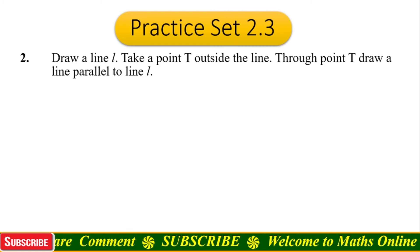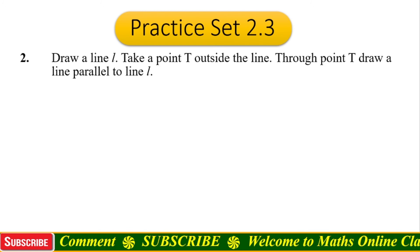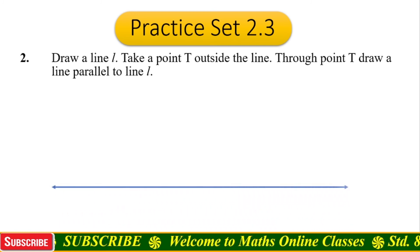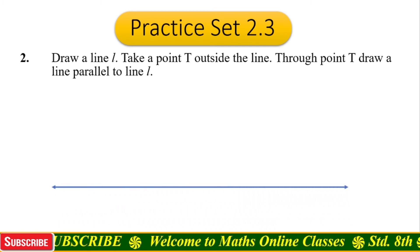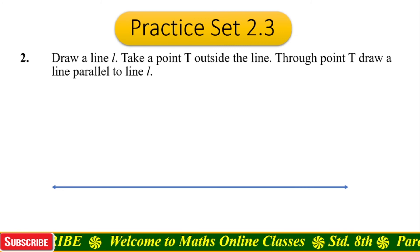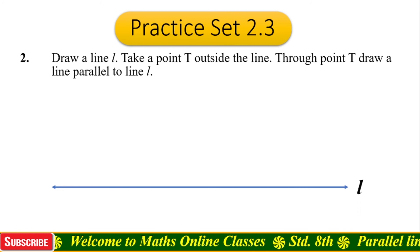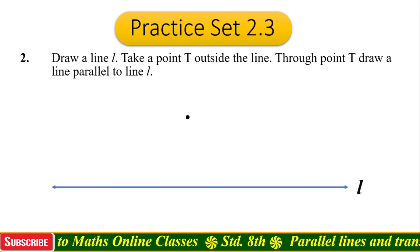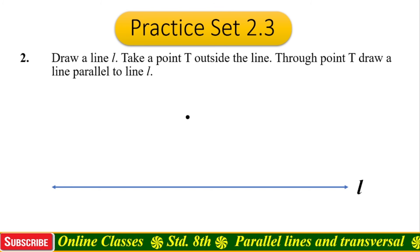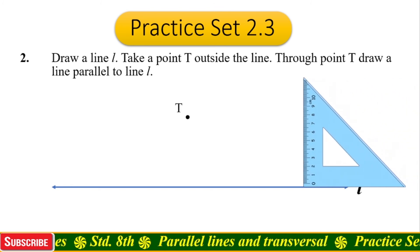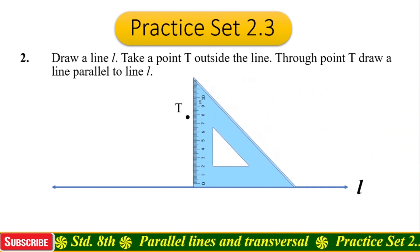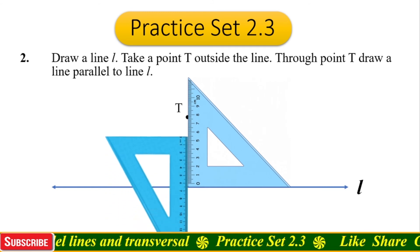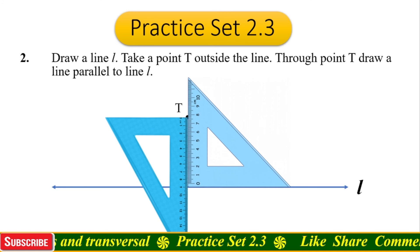Let us draw one line and name it as line l. Now take any point outside line l and name it as point T. Take a set square and adjust it on point T. Now take another set square upside down and adjust it on point T.